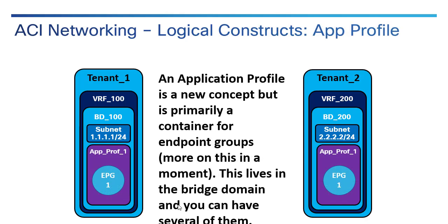A new element that doesn't correspond to the VDC model we're comparing is an application profile. It's really just a container for endpoint groups, which are essentially connections. This lives inside the bridge domain and you can have several of them. So inside a tenant is a VRF, inside a VRF is a bridge domain and subnets, and also contained in the bridge domain is an application profile, and inside the application profile are endpoint groups.